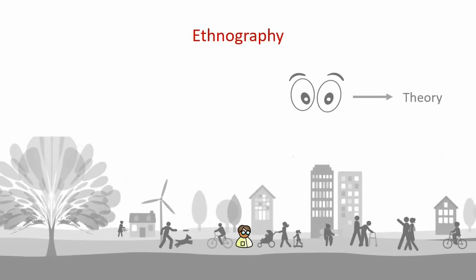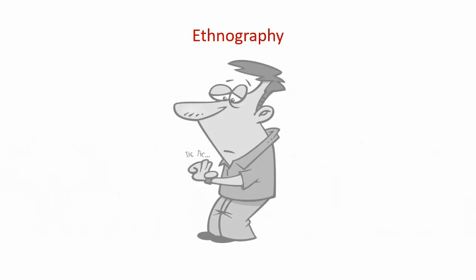Ethnography may sound like grounded theory, but grounded theory is interested in finding emerging patterns and developing theories based on those patterns, while ethnography is interested in making generalizations about a specific group of people from a holistic perspective. Because the researcher has to immerse themselves, these studies take a long time and are longitudinal in nature — not just a snapshot from a few interviews over two days. Ethnography requires observation over an extended period, so data collection will be qualitative, including the technique of participant observation.